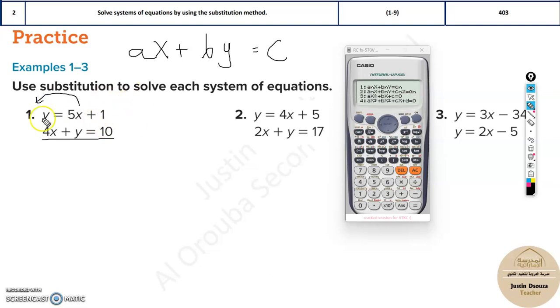So just take this 5x to the other side, that will be negative 5x, or subtract 5x on both sides. So you will be having minus 5x plus y equals 1, and the below equation is 4x plus y equals 10.